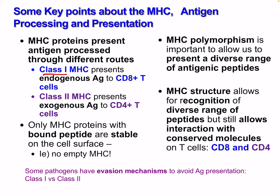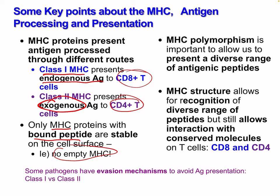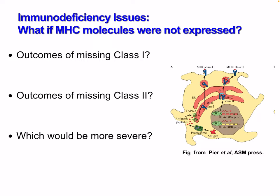Key points: MHC proteins present antigens processed through different routes. Class 1 presents endogenous antigens and activates CD8 T cells; class 2 presents exogenous antigens and activates CD4 T helper cells. Only MHC proteins bound with peptide are stable on the cell surface — there are no empty MHCs ever being used. MHC polymorphism allows presentation of a diverse range of antigenic peptides. MHC structure allows recognition of diverse peptides while still allowing interaction with conserved molecules on T cells, including CD8 and CD4. Some pathogens have evasion mechanisms to avoid antigen processing for both class 1 and class 2.